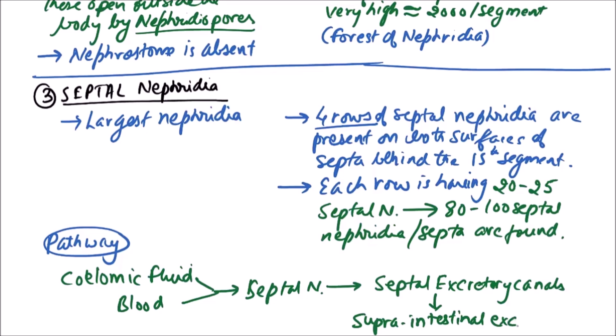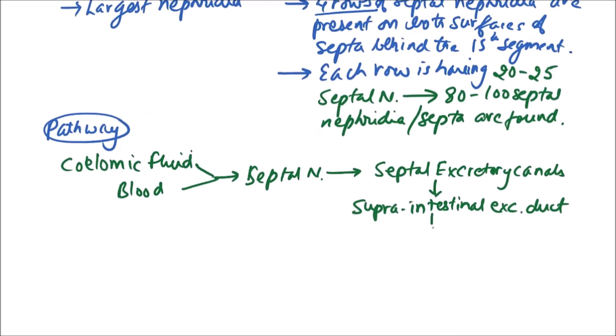From here the waste is poured into intestine via a small ductules and then from intestine it is ejected along with the fecal matter.